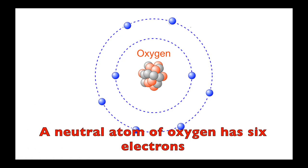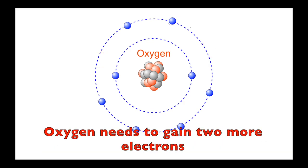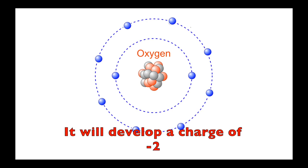A neutral atom of oxygen has six electrons. In order to have a full outer shell, oxygen needs to gain two more electrons. It will develop a charge of minus two.